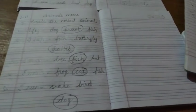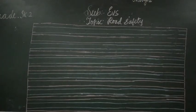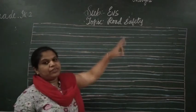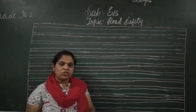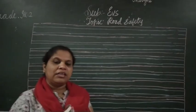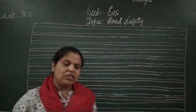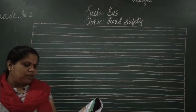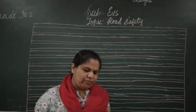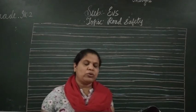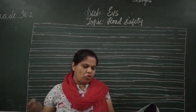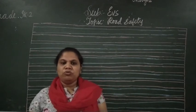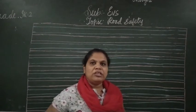Now we will move on to the next topic: road safety. Do you know what road safety is? When you walk on the road, what do you see? You have seen vehicles, parked vehicles. You can see an overbridge, a traffic signal, a pavement, a zebra crossing, a traffic policeman, a subway, a bus station, and a danger sign. All these you can see when you walk on the road.